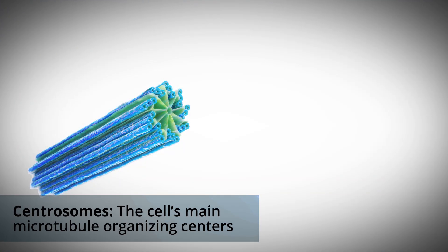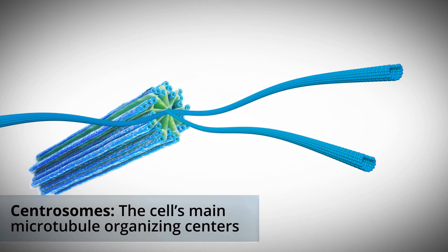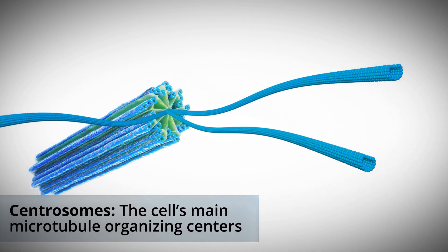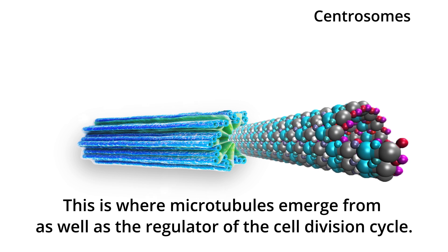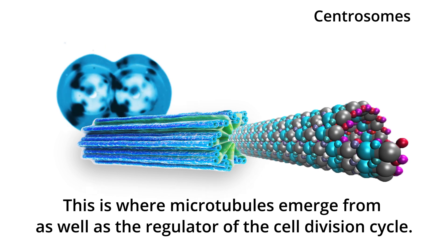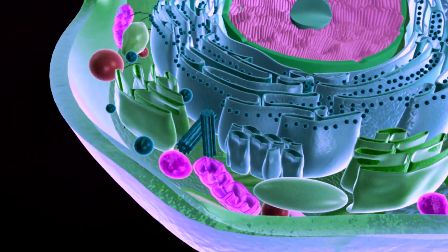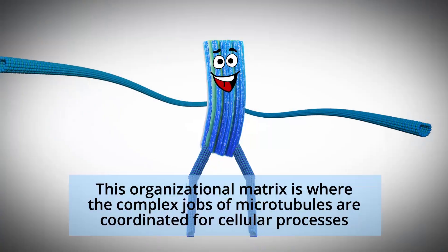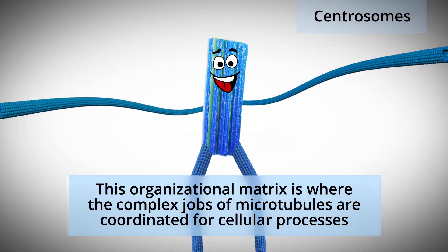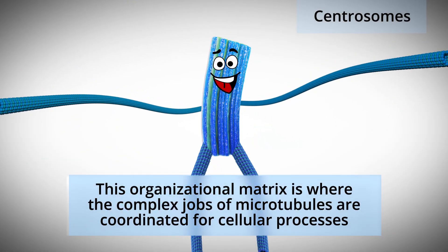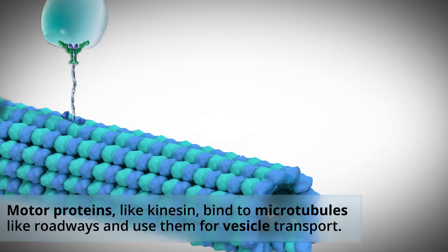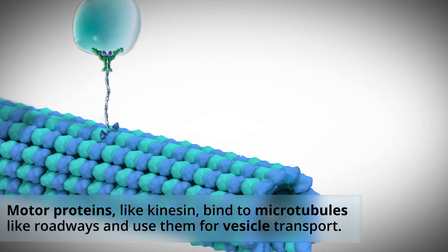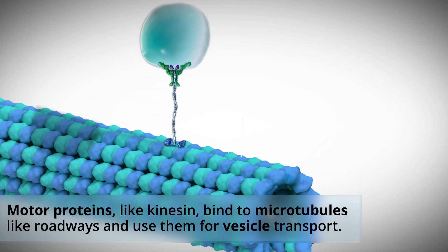The cell's main microtubule organizing center is called the centrosome. This is where microtubules emerge from, as well as the regulator of the cell division cycle. This organizational matrix is where the complex jobs of microtubules are coordinated for cellular processes. Motor proteins bind to microtubules like roadways and use them for vesicle transport.